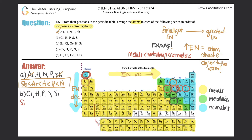So silicon would have the lowest electronegativity. Then comes hydrogen. Now you work your way from left to right: phosphorus, sulfur, and then chlorine. They're trying to trick you by setting up nice period and group trends, but they're going across metals, metalloids, and non-metals. So always remember to group your metals together, group your metalloids together, group your non-metals together, and do it that way.